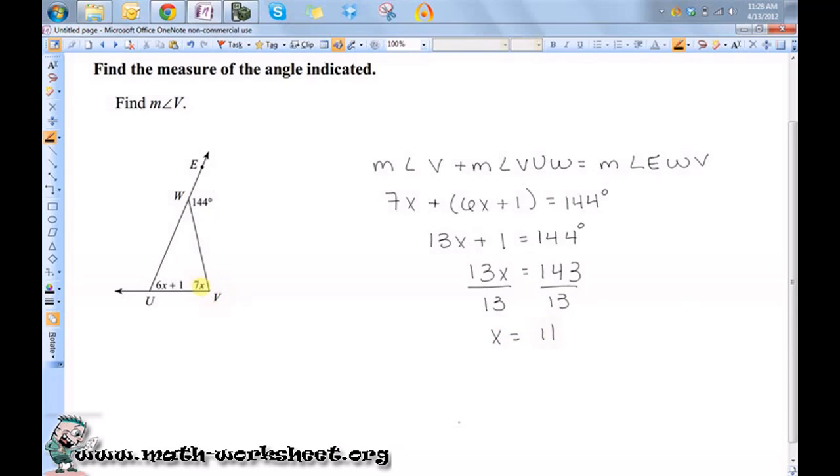Now that's the value for X, that's not the measure of angle V. The measure of angle V is equal to 7X, so it's equal to 7 times 11, or 77 degrees.